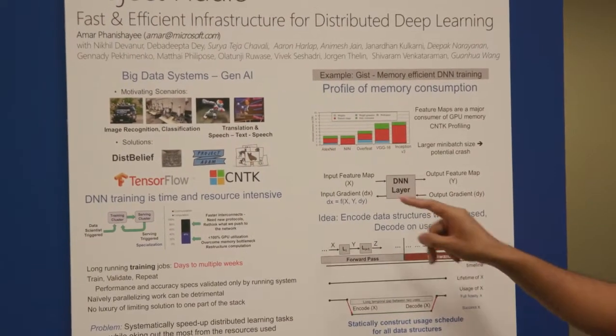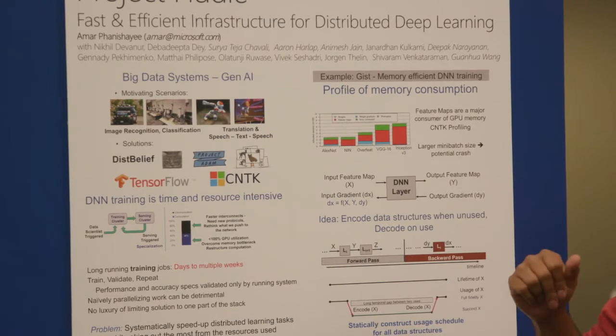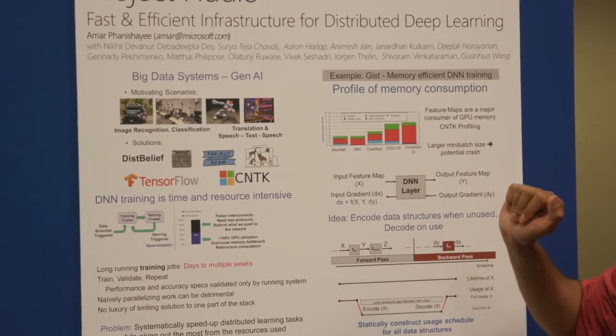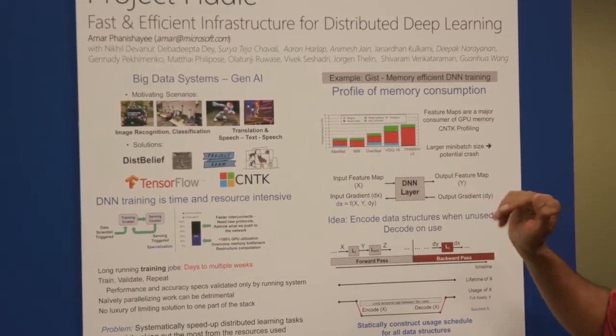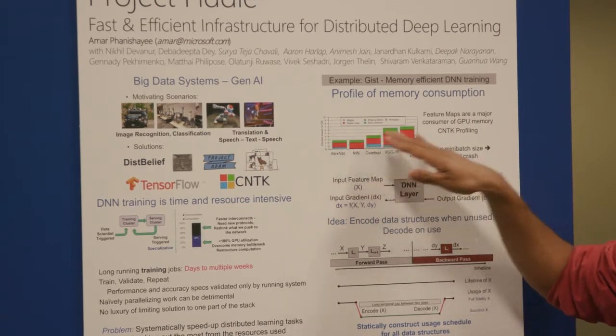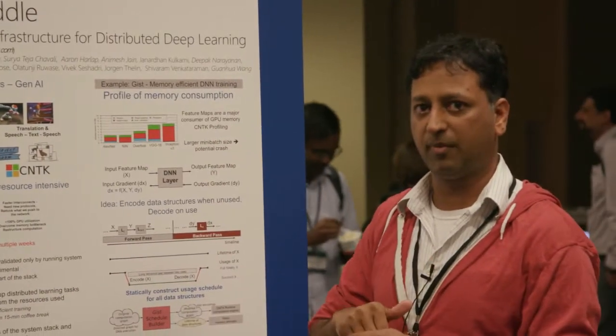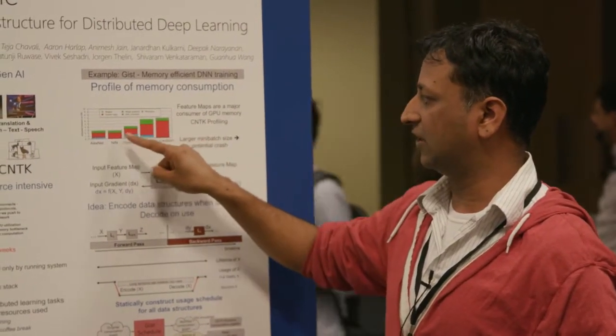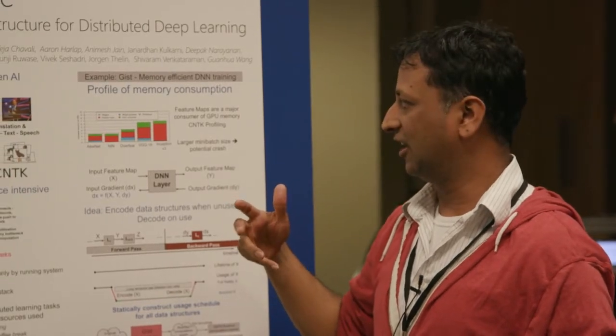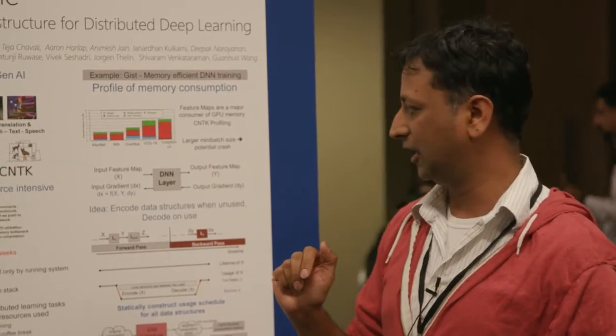The first thing to note here is memory is a bottleneck for even single GPU training. Sorted on this x-axis, we've sorted different DNNs for image classification, effectively sorted them over time. And you'll note that the memory consumed by these different DNNs over time increases. We further dug deeper and wanted to find out what in there is consuming memory. The stuff that's marked in red, that's highlighted in red, are the heavy hitters. And those are the feature maps that are stored and needed for backward computation during DNN training.